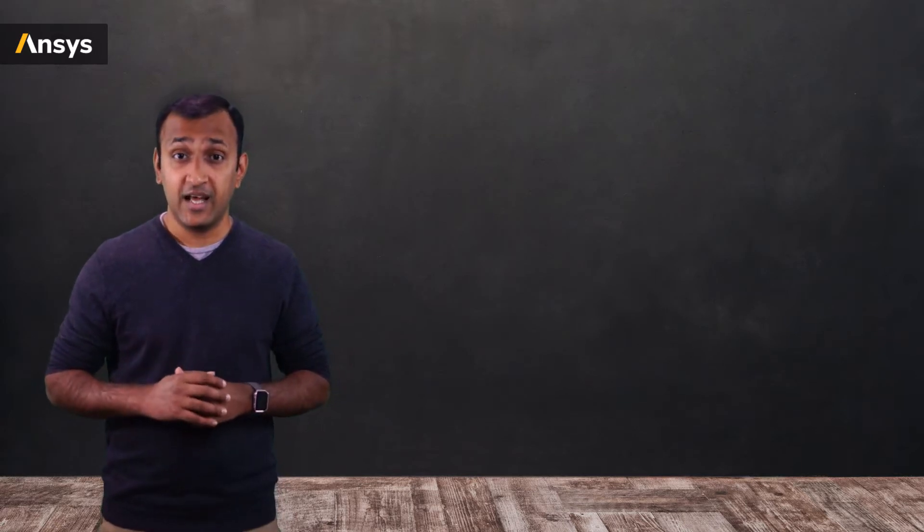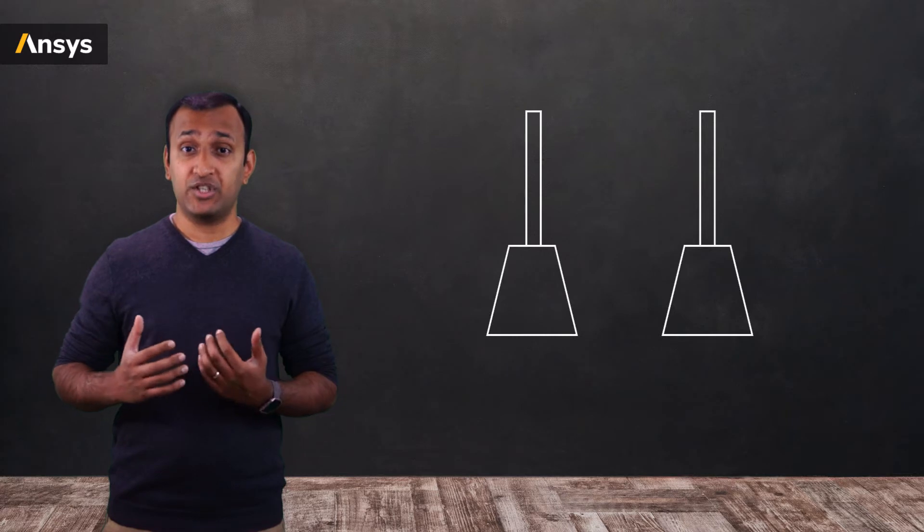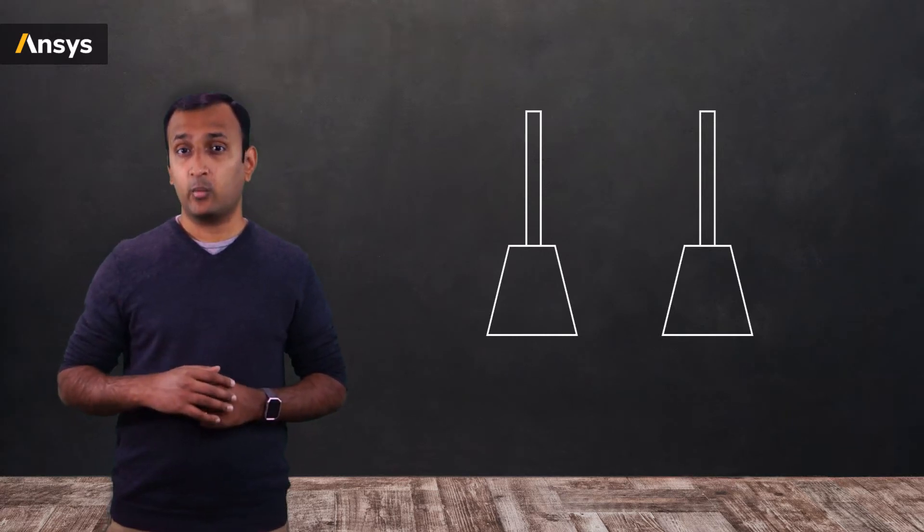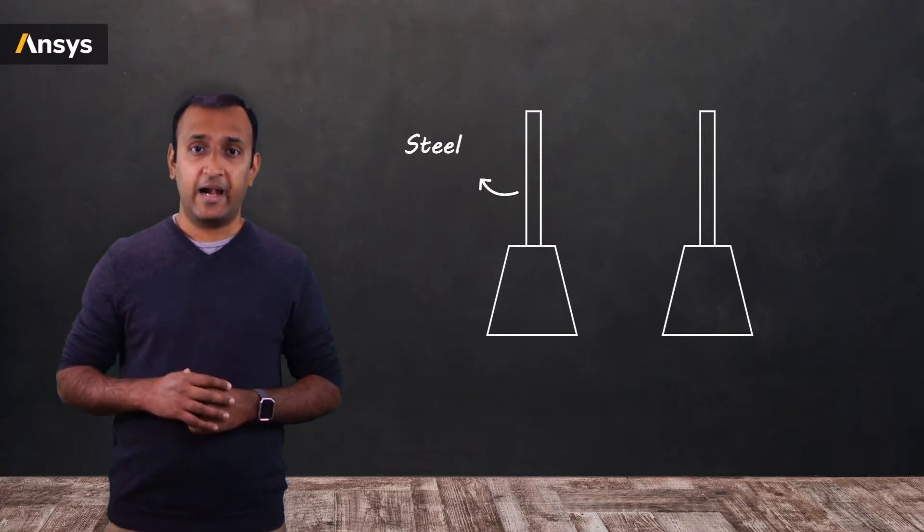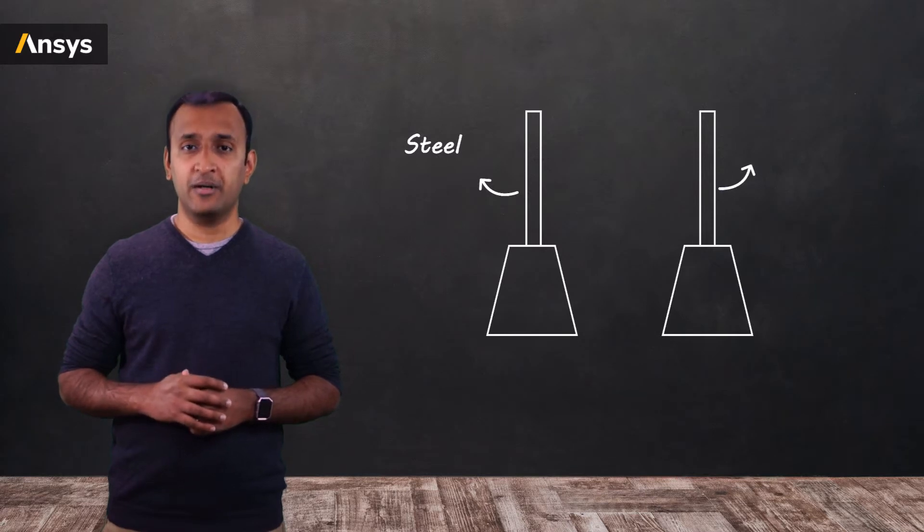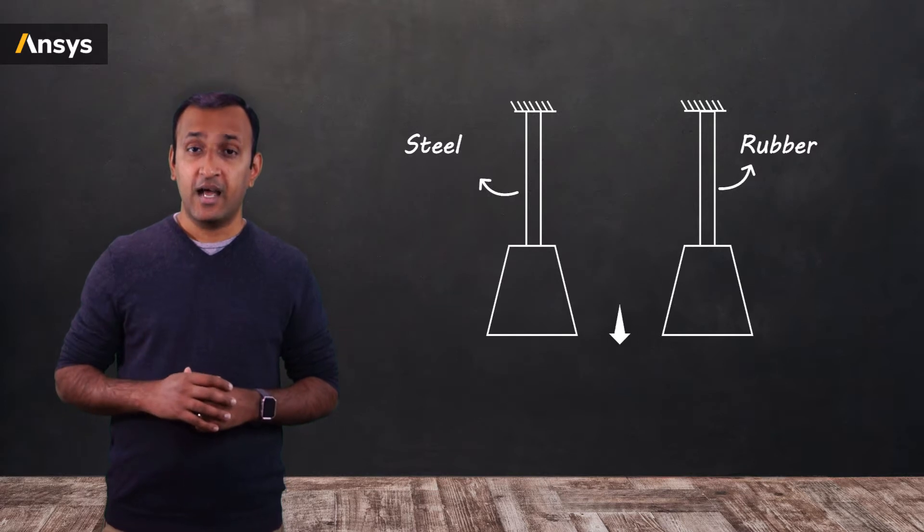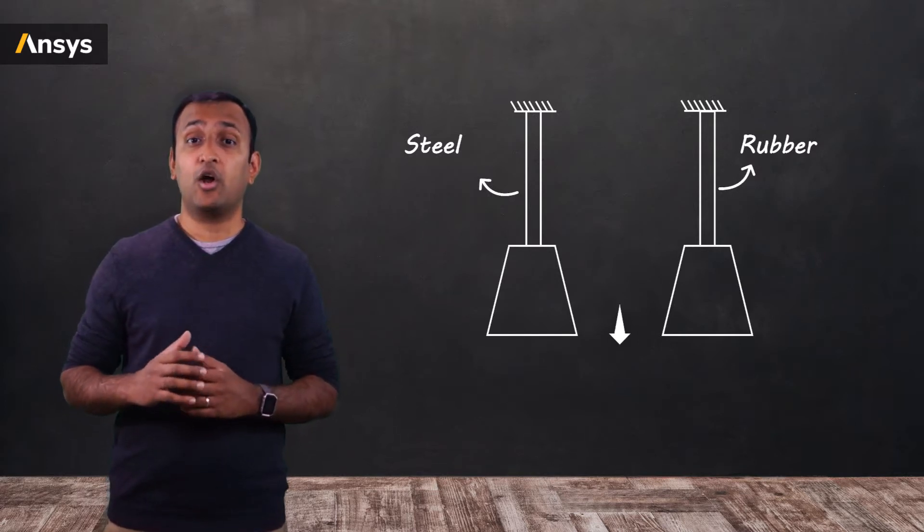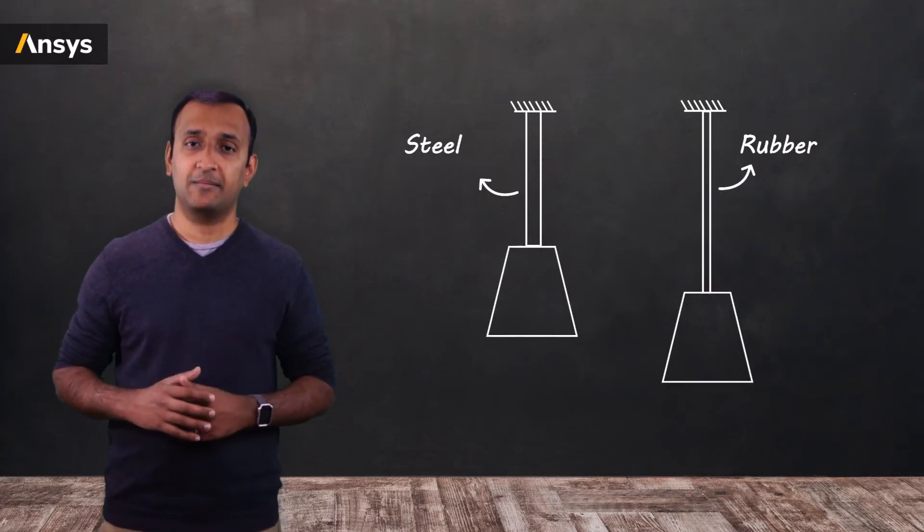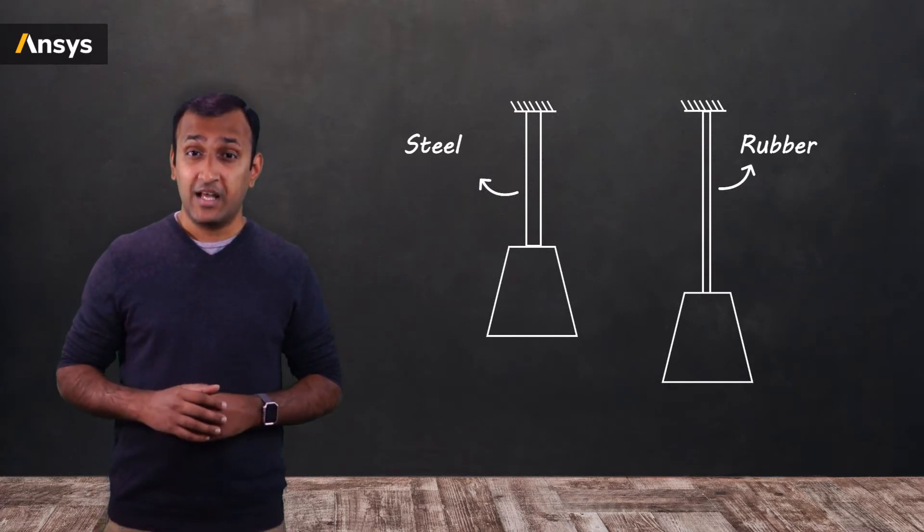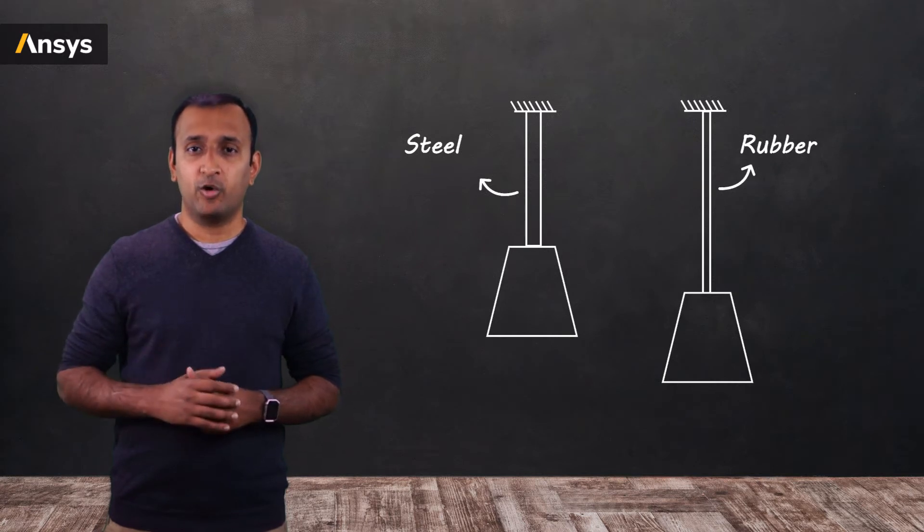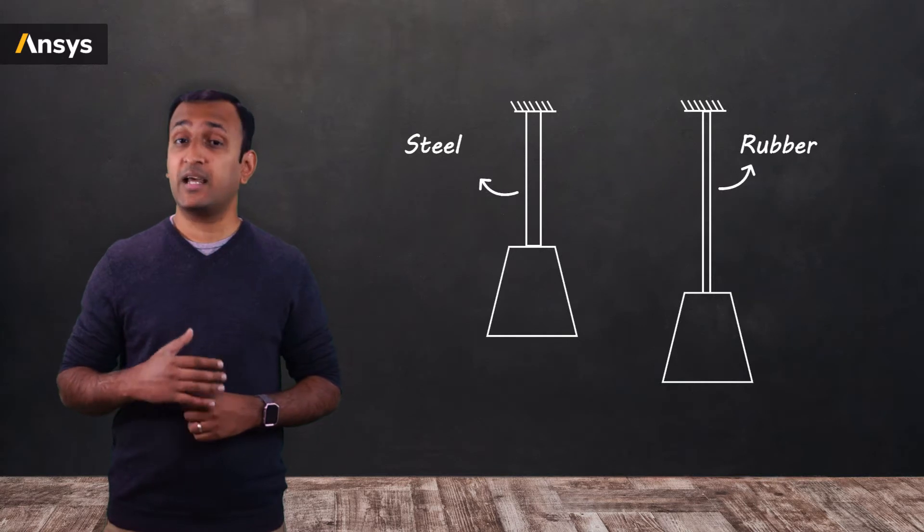For instance, if we take two samples of same shape and dimensions, but one made of structural steel and the other made of neoprene rubber, fix it on one end and attach a dead weight on the other end, the rubber bar expands a lot more than structural steel. This is because the rubber must undergo large deformation before its internal forces can support the dead weight, whereas the steel bar generates the same amount of forces for a very little deformation.